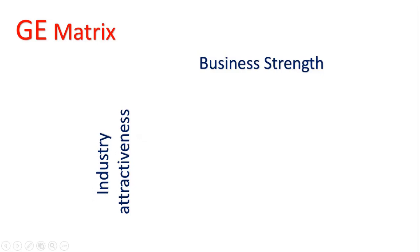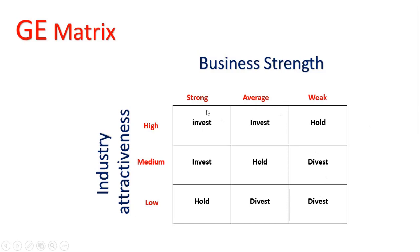Let's see how it works. Looking at this table, the horizontal axis shows the business strength meter: strong, average, or weak. The vertical axis shows the industry attractiveness meter: high attractiveness, medium attractiveness, or low attractiveness.